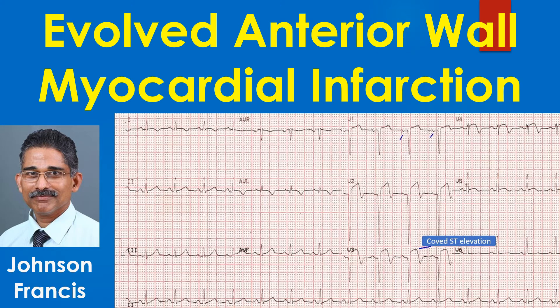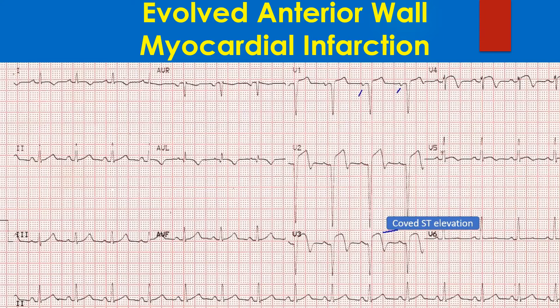This ECG shows evolved anterior MI. It demonstrates sinus rhythm at a rate of around 100 per minute with QS complexes in anterior leads, along with a curved ST segment elevation and T wave inversion, suggesting evolved anterior wall myocardial infarction.